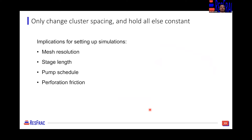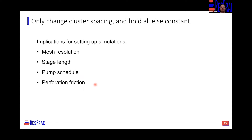What that boils down to is: mesh resolution — you want that to remain consistent — along with stage length, the pump schedule (pounds per foot, gallons per foot, but also the ramp schedule and pumping rate). And then the more complex one to think about is this concept of perforation friction, which we'll spend a little bit of time going through on the slides.